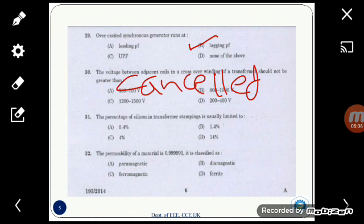And the next 31st question is: the percentage of silicon in transformer stampings is usually limited to? Option C, 4%.